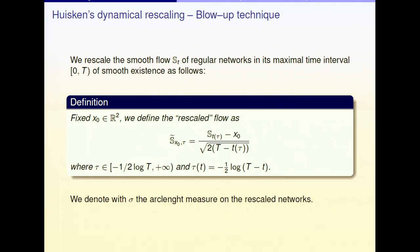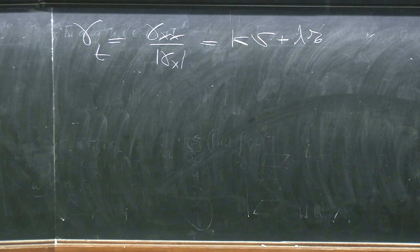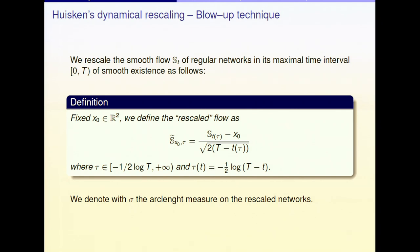So we take S(T) as the flow of our network at time T, varying between zero and the singular time big T, during which everything is smooth. The evolution is gamma_t = gamma_{xx}/|gamma_x|, which is the curvature times the normal plus some tangential velocity. We define a new time parameter tau varying between minus one-half log(T) and plus infinity, related to the original time by the standard relation.